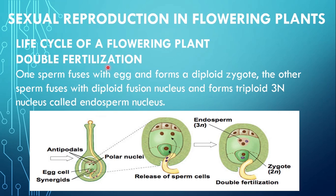After pollination, the next step is fertilization, and the term used here is double fertilization. One sperm fuses with the egg and forms the diploid zygote. The other sperm fuses with the diploid fusion nucleus and forms the triploid (3N) nucleus called the endosperm nucleus. Is pollen grain ke paas two sperms present hote hain: ek sperm egg ko fertilize karta hai aur diploid zygote ko form karta hai, jabke doosra sperm diploid fusion nucleus ke saath fuse karke triploid endosperm nucleus form karta hai. So two times fertilization occurs — one forming the 2N zygote, and second forming the 3N endosperm.